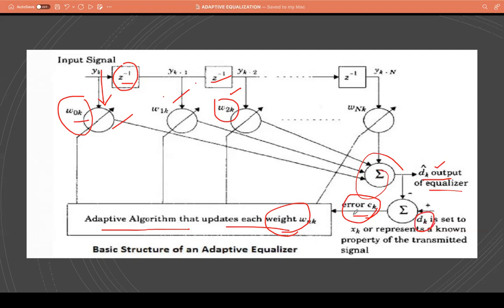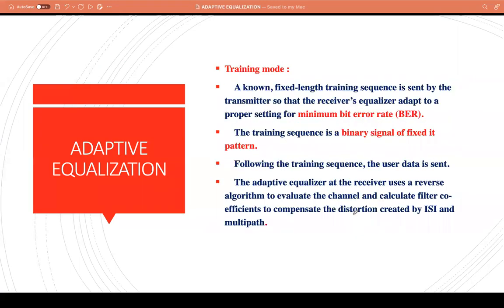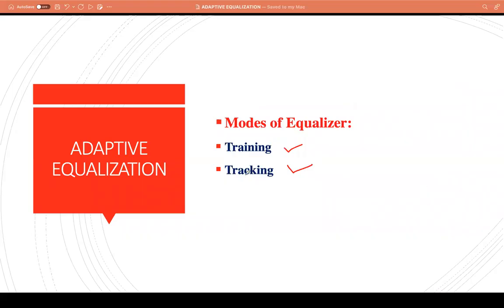Basically, in case of an adaptive equalizer, there are two modes of operation. One is the training, the other one is the tracking.